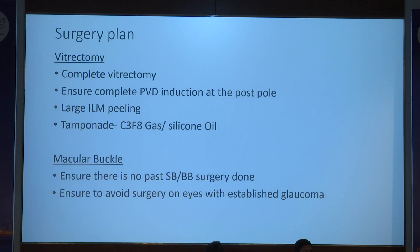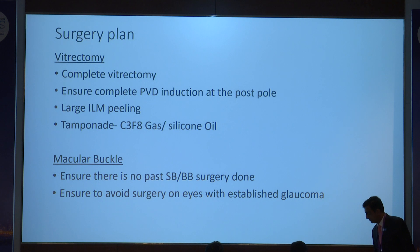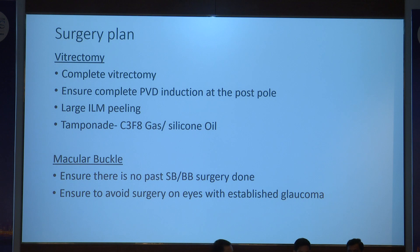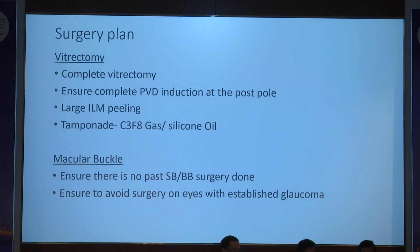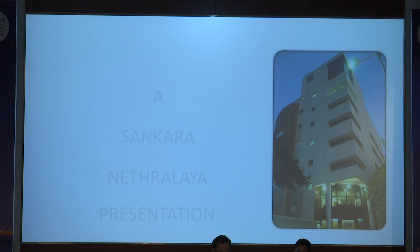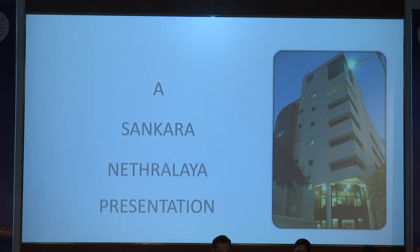If there is a macular hole, you can try a flap to cover the macular hole. Tamponade can be C3F8 gas or silicone oil, depending on additional breaks and the experience of the surgeon. Scleral buckling: if a patient has had previous buckling done, macular buckle is practically impossible, so those eyes resort to vitrectomy. These are a few references as a preferred practice pattern. Thank you very much for your patience.